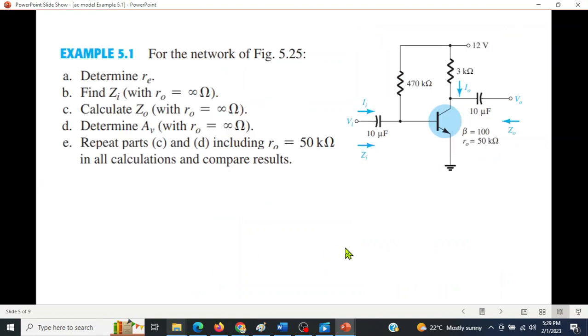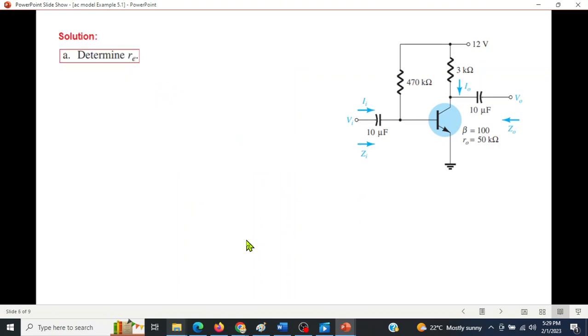Now coming to the question, for this network we have to determine five parameters. We'll do one by one. The first thing: determine r_e. We have learned that r_e is the resistance with the emitter and the formula is r_e = 26 mV divided by current I_E. Now how do we find I_E?